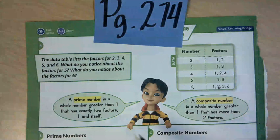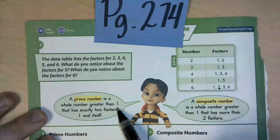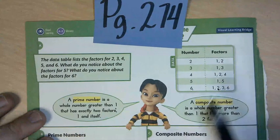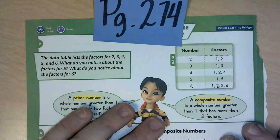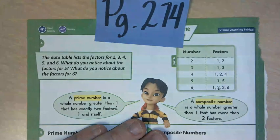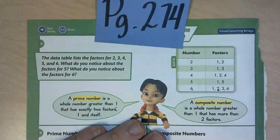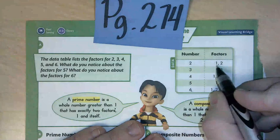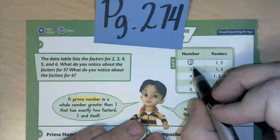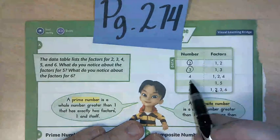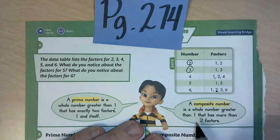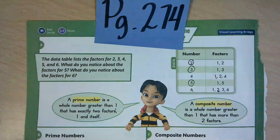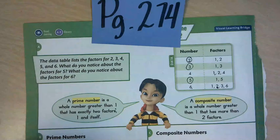It says a prime number is a whole number greater than one that has exactly two factors: one and itself. Grab your pencil and circle whichever numbers only have factors of one and itself. That would be two — one and itself. Three — one and itself. We would not circle four because four has factors one, two, and four. We would circle five — one and itself. We would not circle six because it has more than two factors. Those circled numbers — two, three, and five — are called prime numbers.